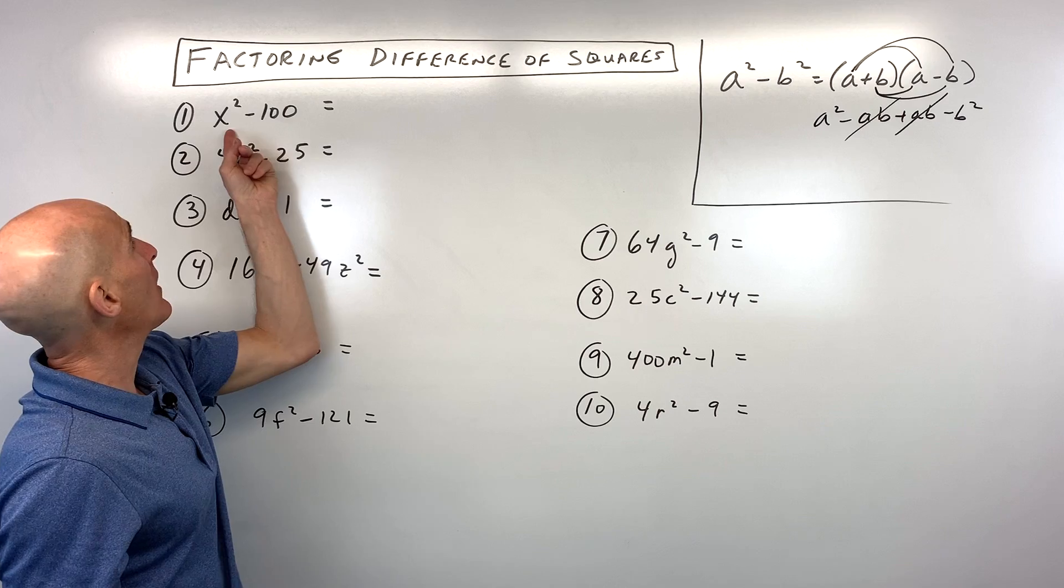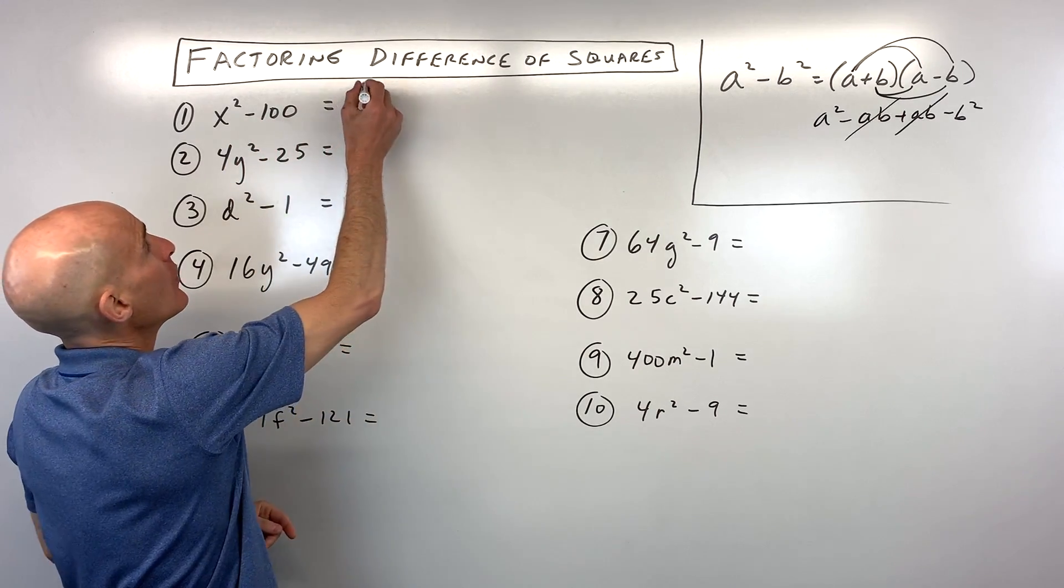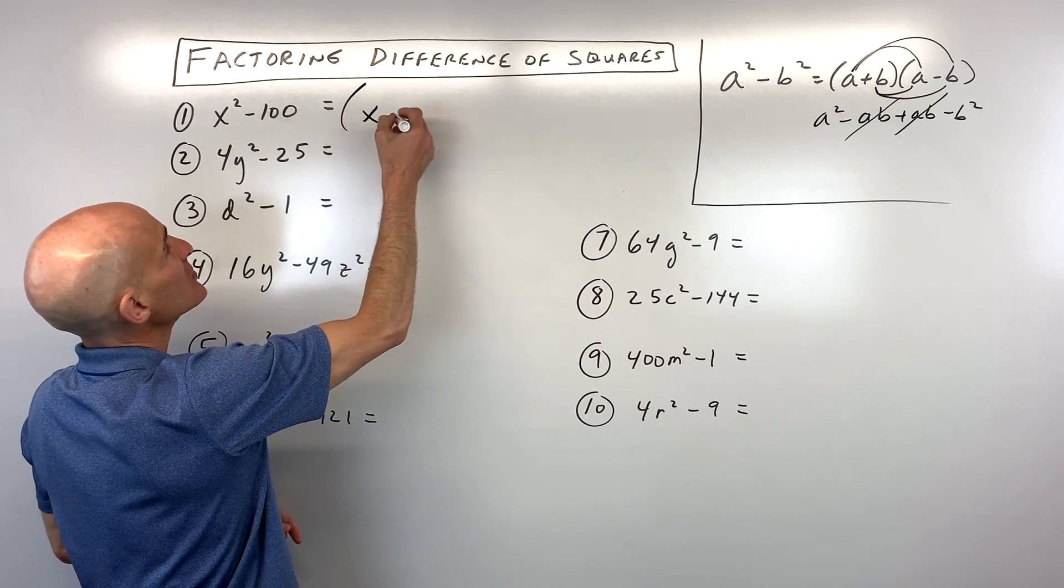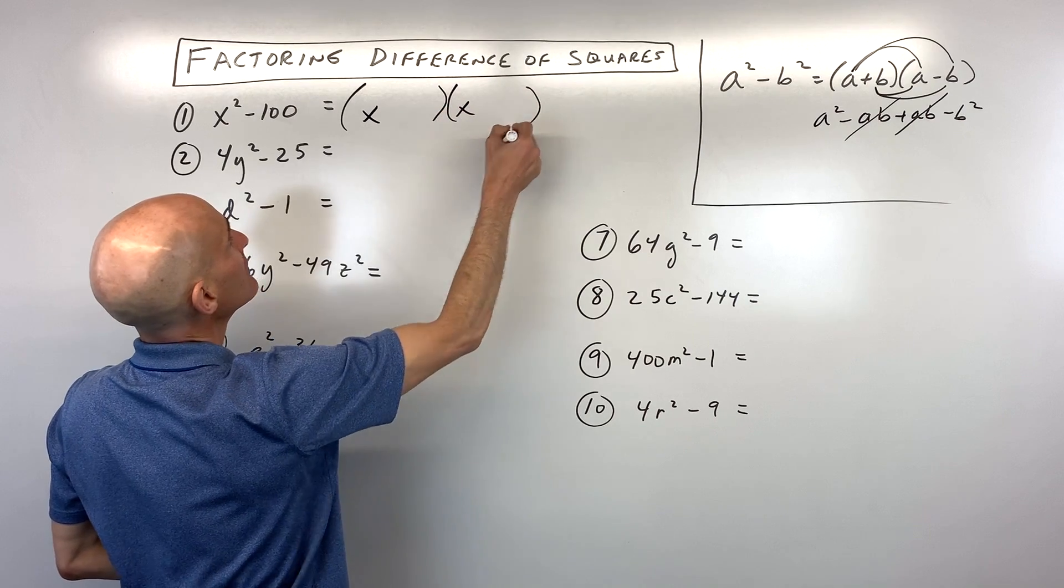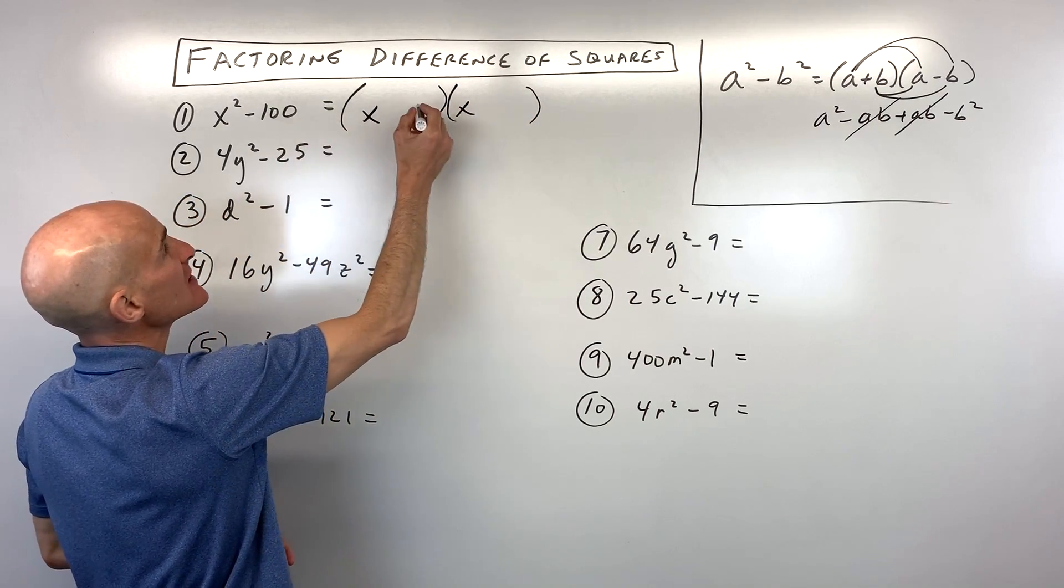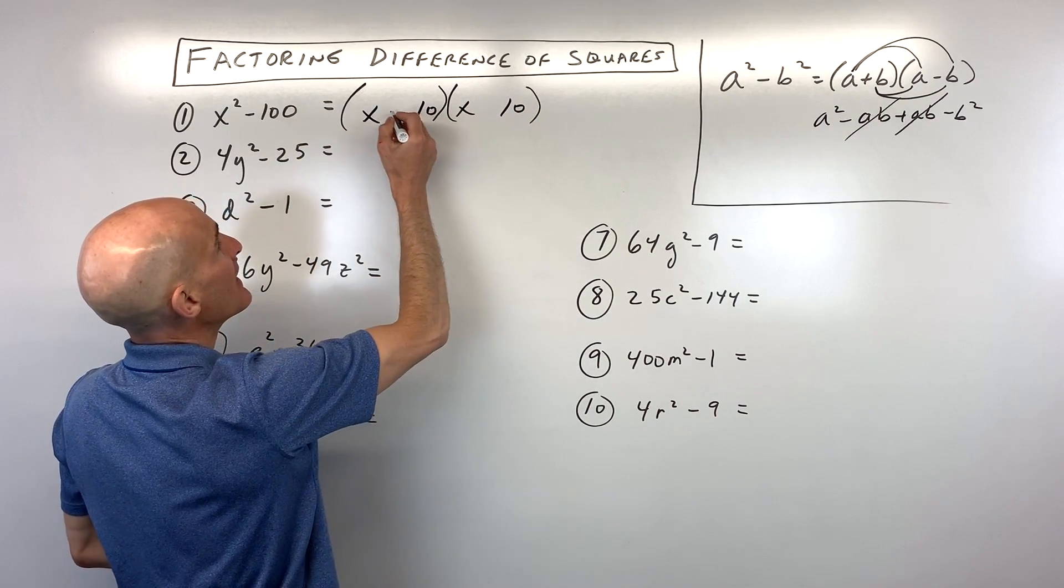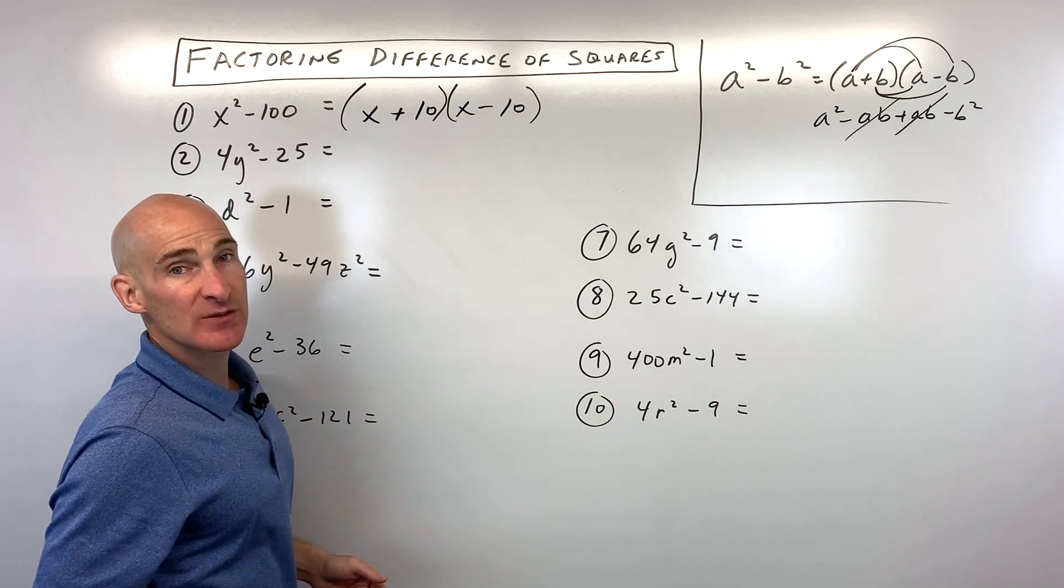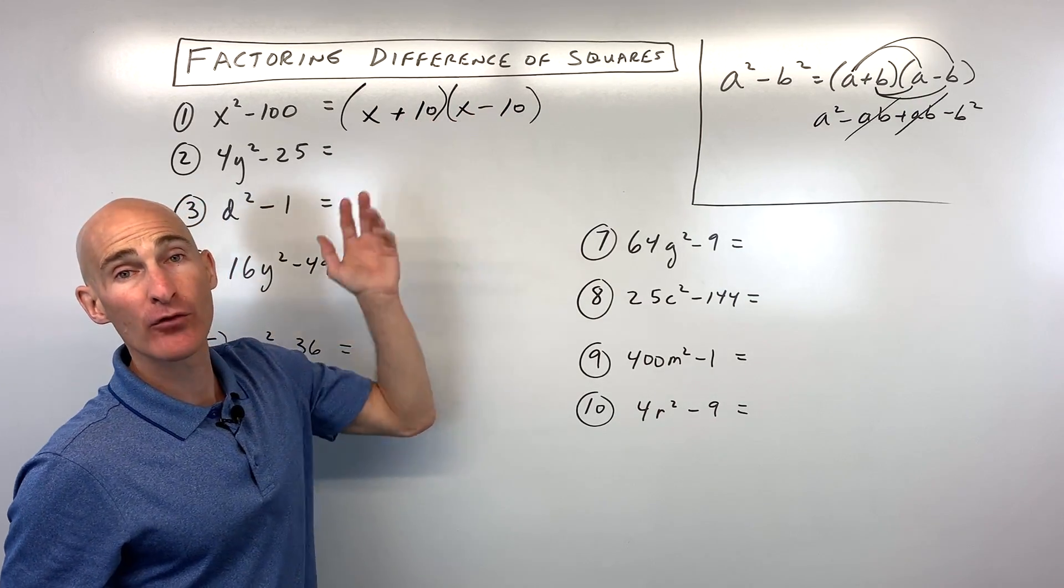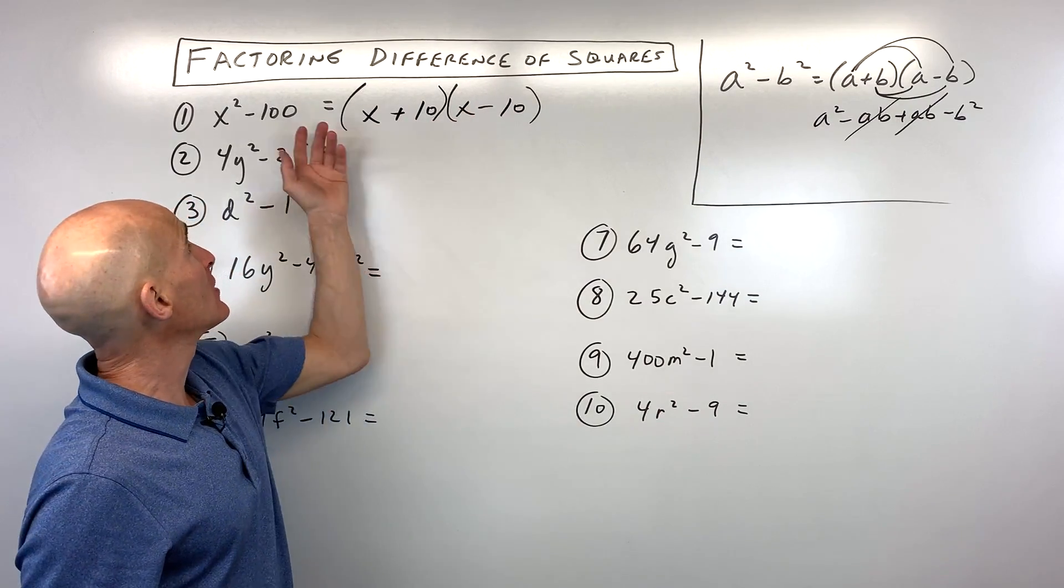So let's look at the first example, x squared minus 100. Well, when I take the square root of x squared, you see how I get x. And when I take the square root of 100, see how I get 10. And now one of these we're going to be adding, one we're going to be subtracting. You can always check your work by foiling it out or multiplying it out, and you'll get back the original.